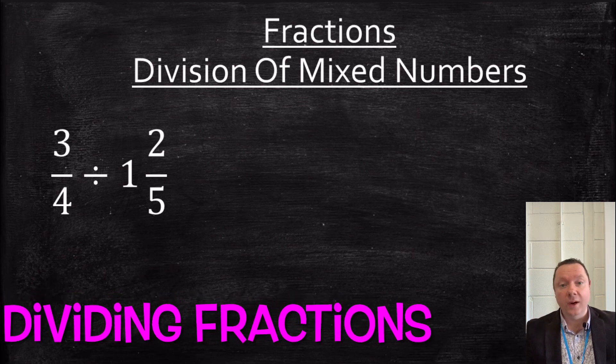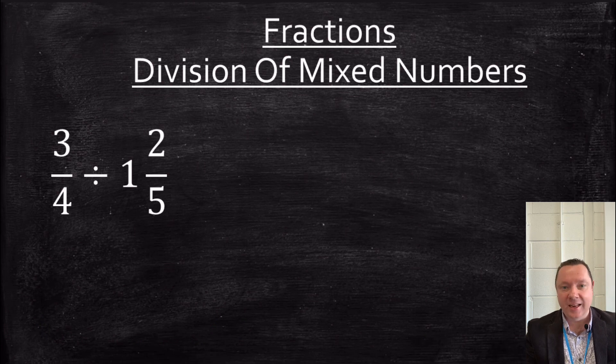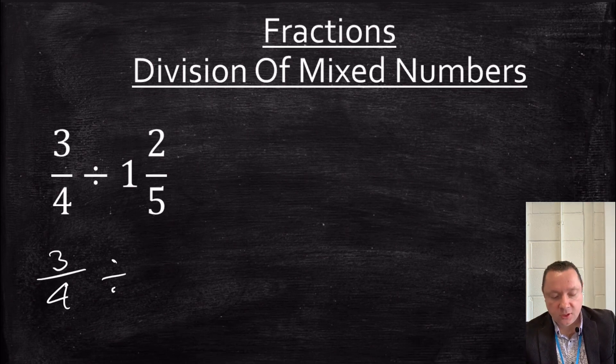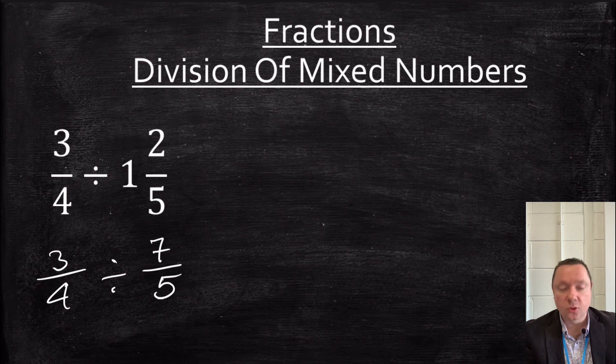Okay, division works in a very similar way to timesing, but there's a little thing you have to do as well. But the first thing I'm going to do, any mixed numbers will change to improper fractions. So we've got 3 quarters to start with, divided by, well, I've got fifths. So I've got 5 fifths plus 2 fifths makes 7 fifths. Or, to put it another way, 1 times 5 plus 2 is 7.